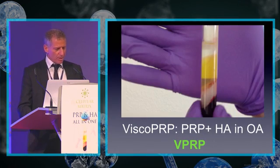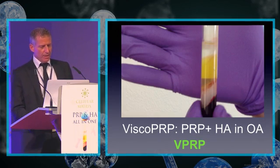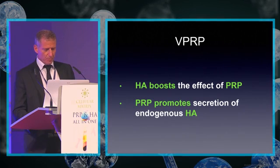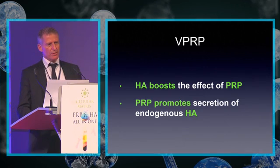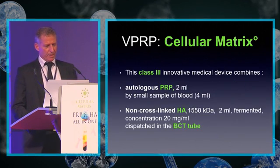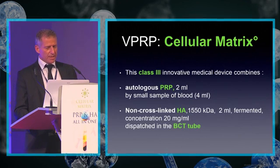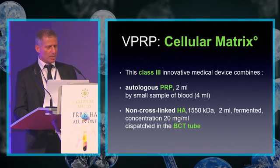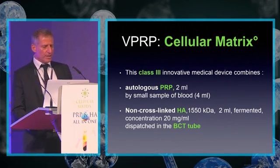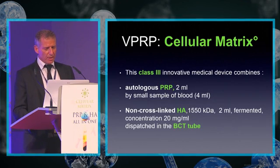Visco-PRP: PRP in combination with HA in osteoarthritis. HA boosts the effect of PRP, and PRP promotes secretion of endogenous HA. Cellular Matrice is a class 3 innovative medical device that combines autologous PRP — 2 mL from a small blood sample of 4 mL — with non-cross-linked HA of 1.5 million Daltons.